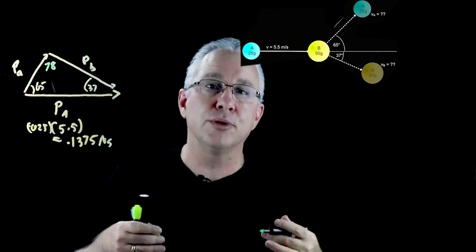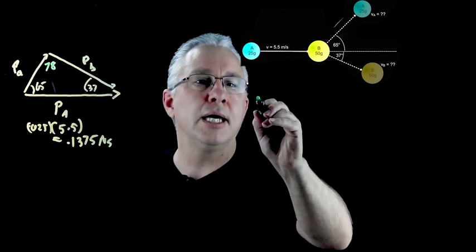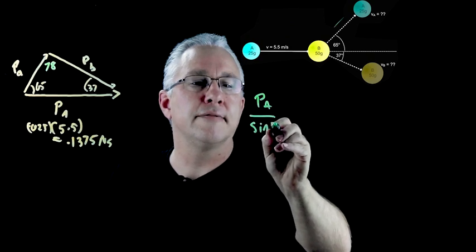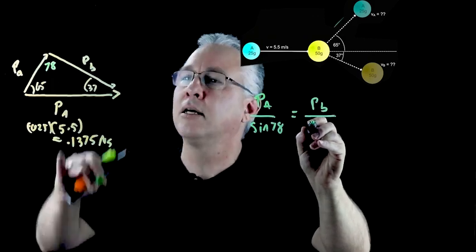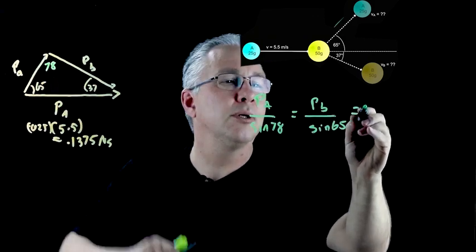And now let's set it out and I'm going to put dimensions and momentum on the top of that ratio. So I have PA over sin 78 equals Pb over sin 65 and that is equal to PA over sin 37.